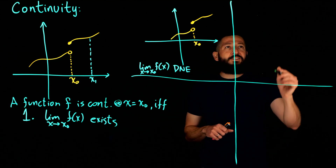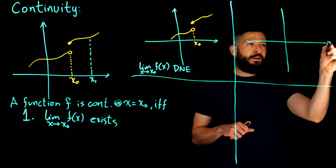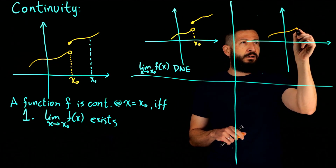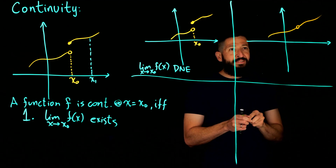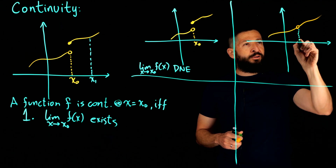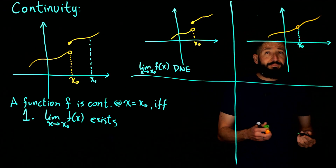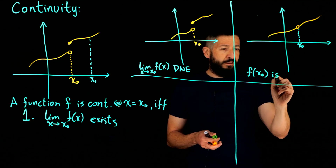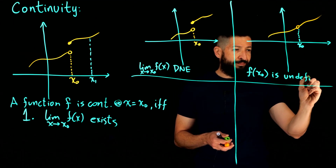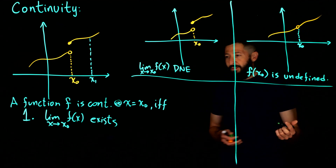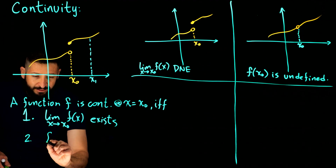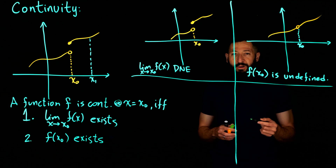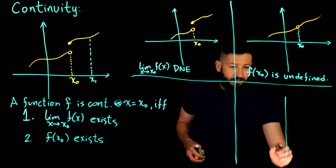Let's see what other things could be a problem. You could have a function that does have a limit at X_naught, but the function just skips through and doesn't take that value. When you look at the vertical line X equals X_naught, the function doesn't take any value there — f(X_naught) is undefined. So to have continuity, you also need the function to be defined at X_naught: f(X_naught) must exist.